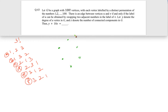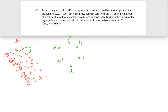We identify them as vertices a, b, c, d, e, f. Now, the edge definition: there is an edge between vertices u and v if and only if the label of u can be obtained by swapping two adjacent numbers in the label of v. For example, swapping 2 and 3 in 1 2 3 gives 1 3 2, so there's an edge between a and b. Similarly, swapping 1 and 2 gives 2 1 3, so there's an edge between a and c.